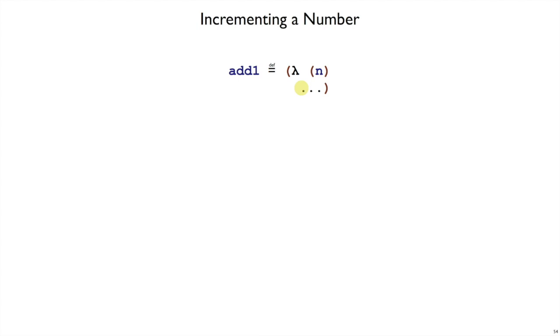Since it's producing a number, it must produce something of the shape lambda f, lambda x. And then what it's supposed to be in the dot dot dot here is that it applies this f to this x, n times. But we don't know the fixed number of f's to write here, because it depends on the argument n.